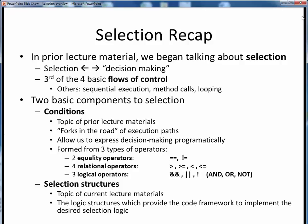In the prior lecture materials, we discussed conditions as a precursor to talking about selection in programming. Recall that selection simply represents decision-making in programming, and it's the third of the four basic flows of control.